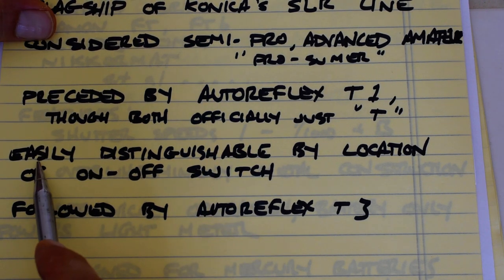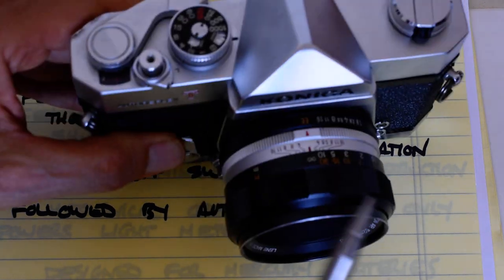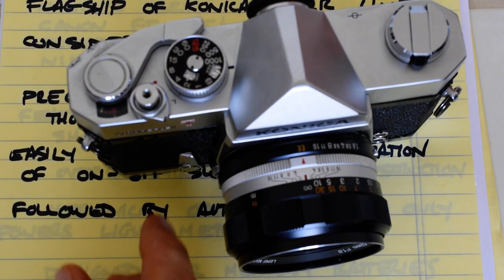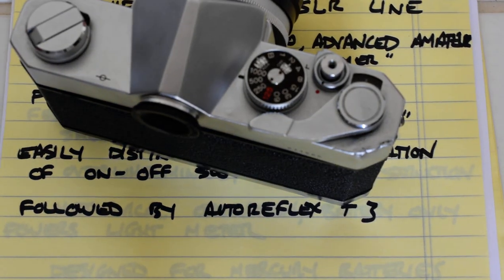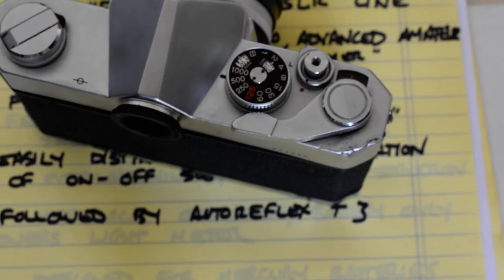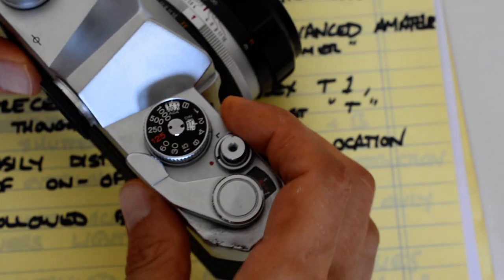Although they're easily distinguishable by the location of the on-off switch. So on the Autoreflex T2, right here, the on-off switch. See if I can get a little better focus on the camera. So the on-off switch is right here.